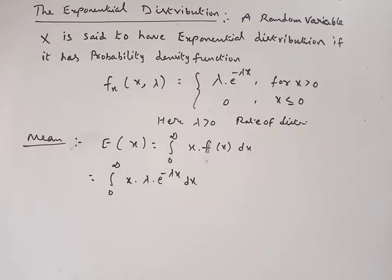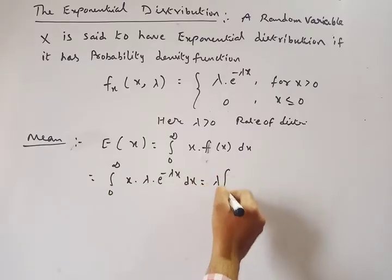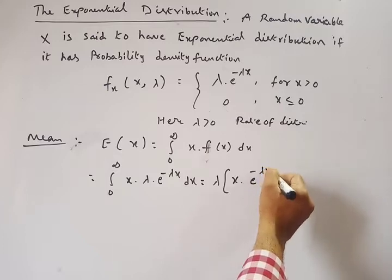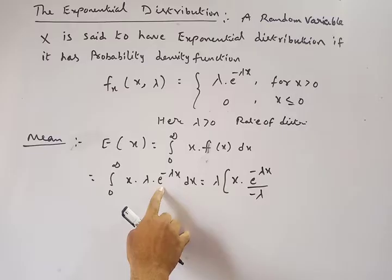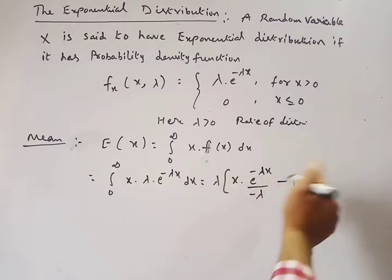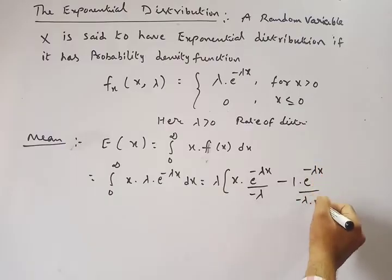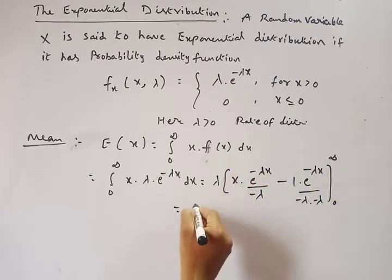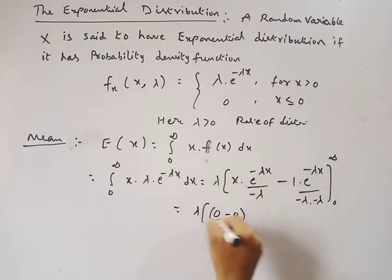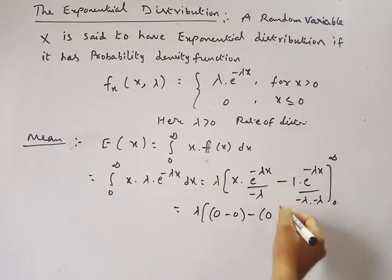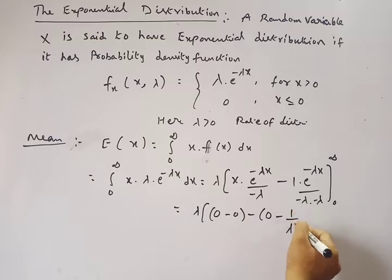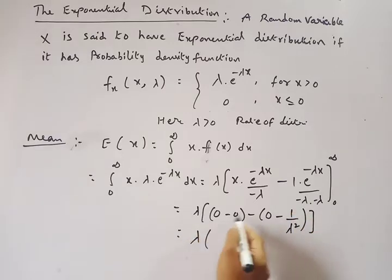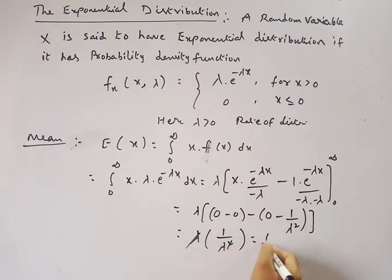We solve this using the UV method. Lambda is constant and stays outside. With u = x and v = e^(−λx), integration gives e^(−λx)/(−λ). Applying the UV formula: u·∫v − u'·∬v. Substituting the upper limit, e^(−∞) = 0, and the lower limit gives 0 for the first term. For the second term, e^0 = 1, giving 1/λ². So lambda × (1/λ²) = 1/λ. Therefore, mean μ = 1/λ.